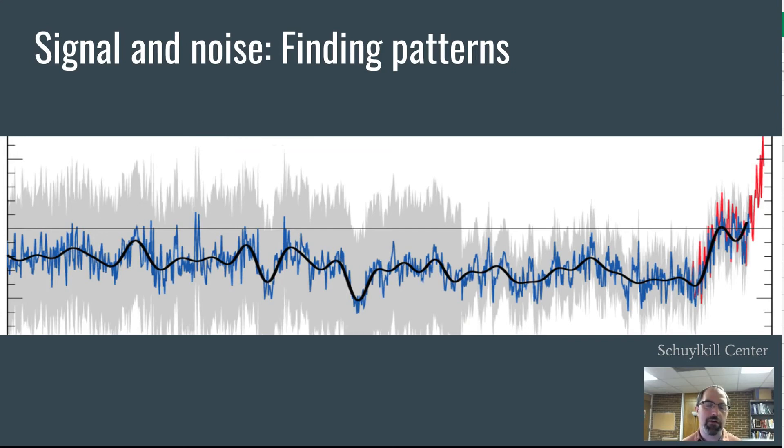Oftentimes what we think about what we want numerical analysis to do is to distinguish between what some people have called the signal and the noise. That is, all the background information that's just random. How do we find the pattern? How do we find that signal underneath all this?